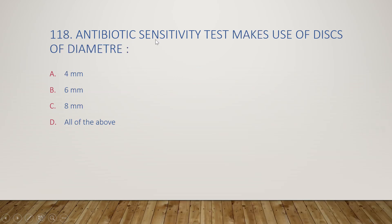Next question: antibiotic sensitivity testing uses discs of diameter 4 mm, 6 mm, 8 mm, or all of the above? The right answer is option B, 6 mm. The disc size used is 6 mm.